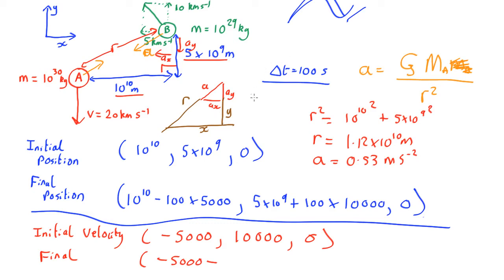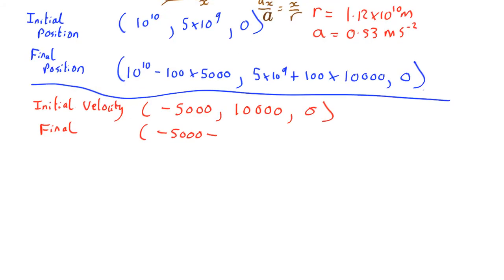So for example, ay over a is going to be the same as y over r. And ax over a is going to be the same as x over r. So what that means is the acceleration in the y direction is going to be equal to ay, which is total acceleration times y over r. Total acceleration is 0.53 meters per second squared times y, which is 5 by 10 to the 9 over r, which is 1.12 times 10 to the 10. And similarly, you can work out ax.